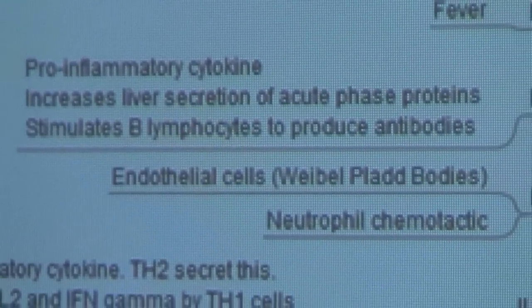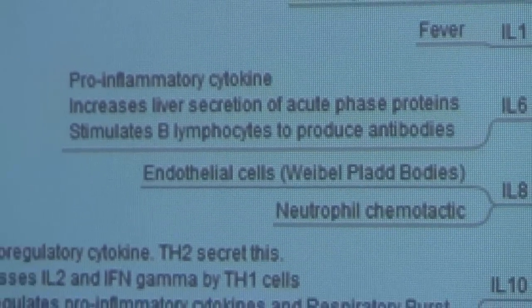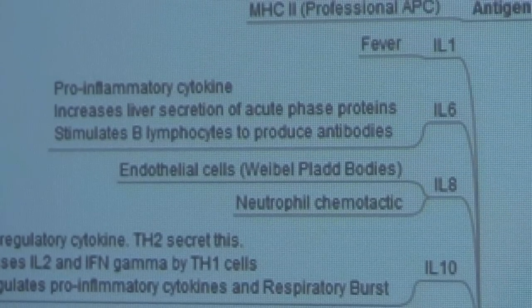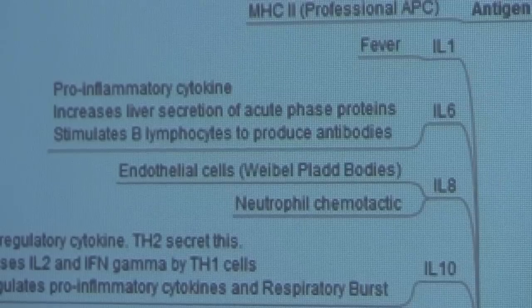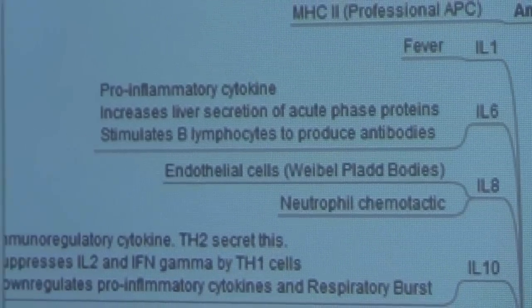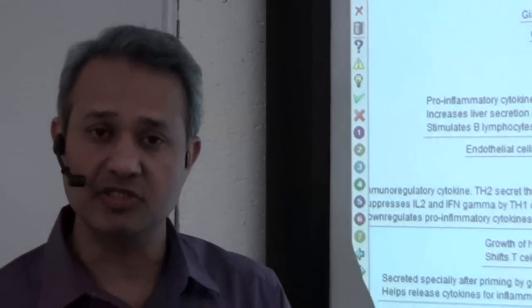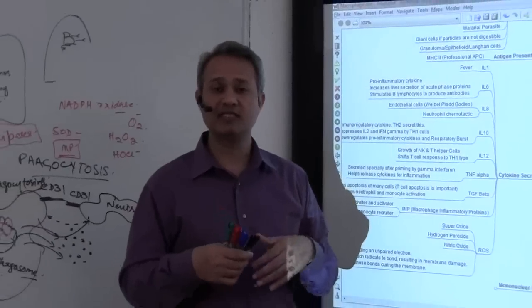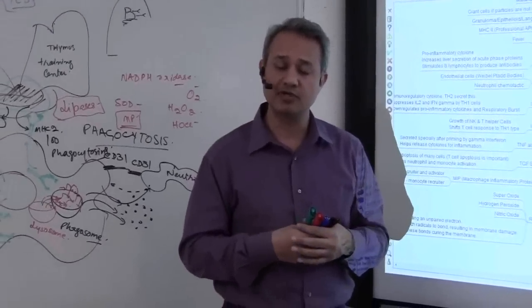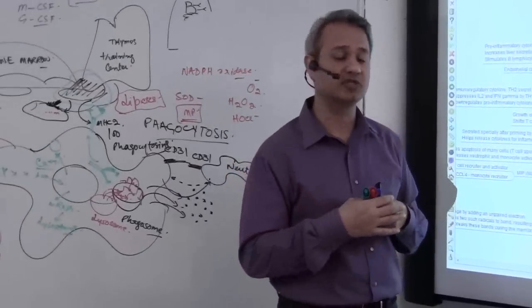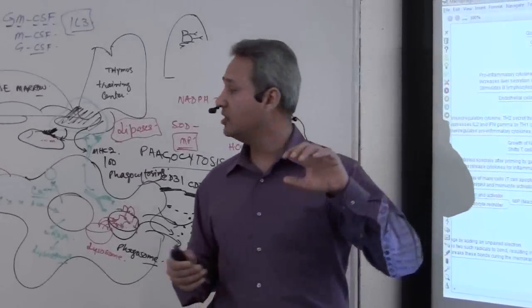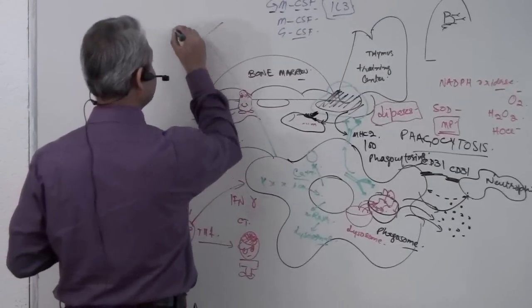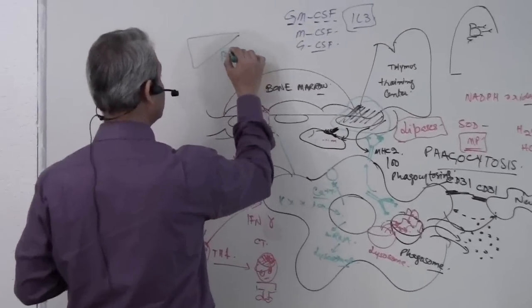Excuse me. It acts on the liver, and it causes the increase in secretion of acute phase proteins. What are the acute phase proteins? C-reactive proteins, the proteins of the complement system, the proteins of the coagulation system, ceruloplasmin, hepcidin, and so on. These are the acute phase proteins. These are the proteins which are used in the acute inflammation. So IL-6 goes and acts on the liver. So it goes from the macrophage. So here is the liver. IL-6 on the liver.